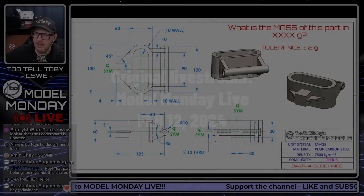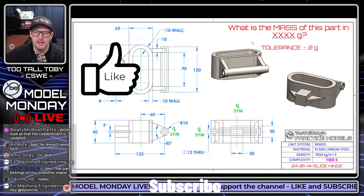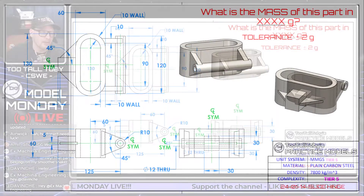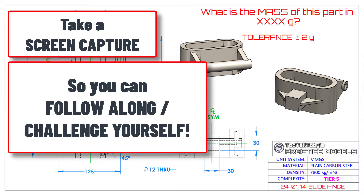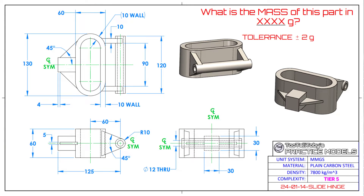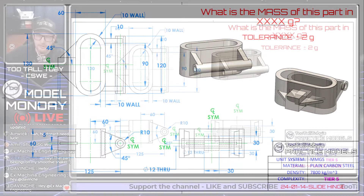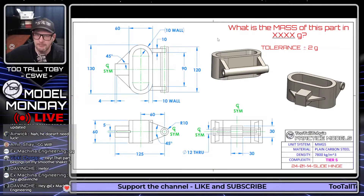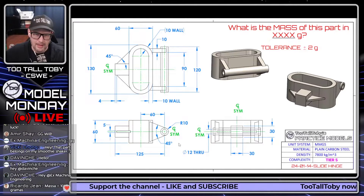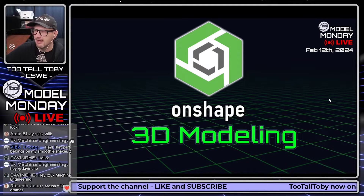Today we're going to take a look at Onshape, specifically this slide hinge. This was a challenge posted on the YouTube channel a few weeks ago, and a couple of people said they were struggling with some dimensions, the offset, and the slot command. The slot command and the offset command can be a little tricky in Onshape — particularly the slot command, which is just a little bit buried and sometimes hard to find. So we're going to talk about those commands as we model this part in our Onshape live modeling tutorial.